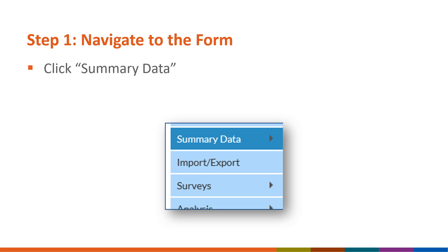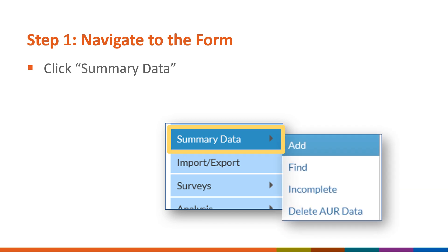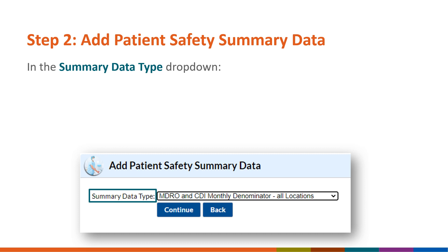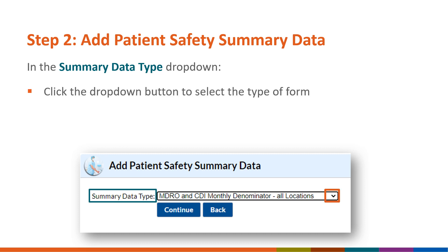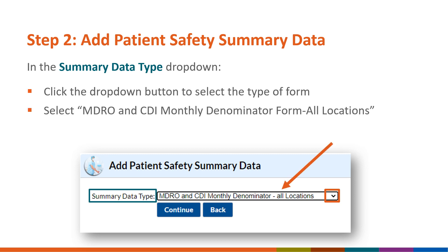To locate the MDRO and CDI denominator form, click the Summary Data tab on the left-hand navigation menu in NHSN. Then click Add to enter a new monthly denominator form. The next screen will require you to select the type of summary data you wish to enter. To locate the LabID denominator form, select MDRO and CDI monthly denominator, all locations from the drop-down menu and click Continue directly below your selection.